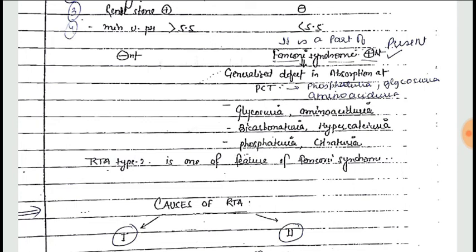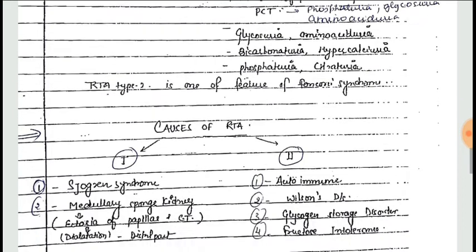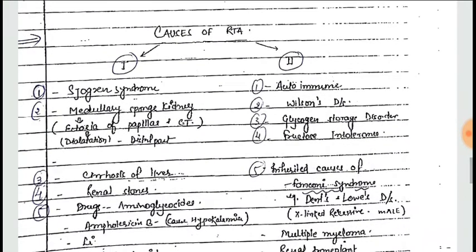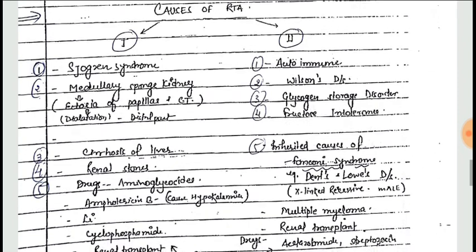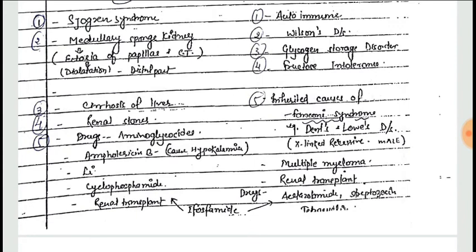The causes of Type 1 renal tubular acidosis include Sjögren's syndrome, medullary sponge kidney disease, cirrhosis of the liver, renal stones, and drugs like aminoglycosides, amphotericin B, lithium, cyclophosphamide, and renal transplant.